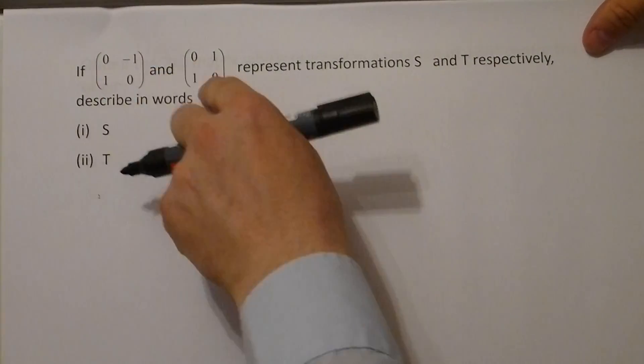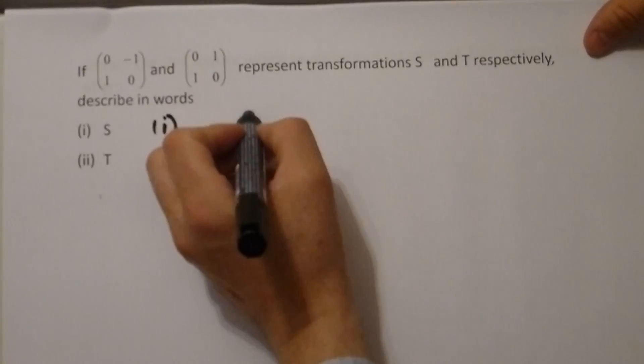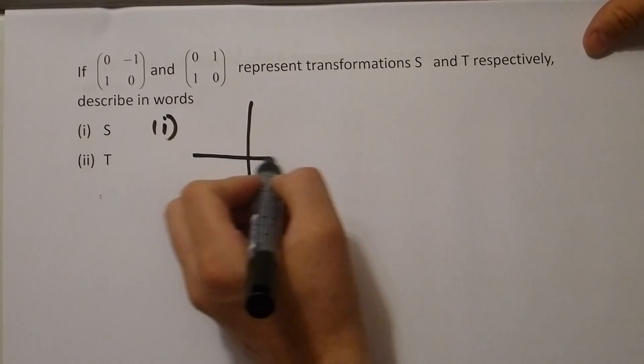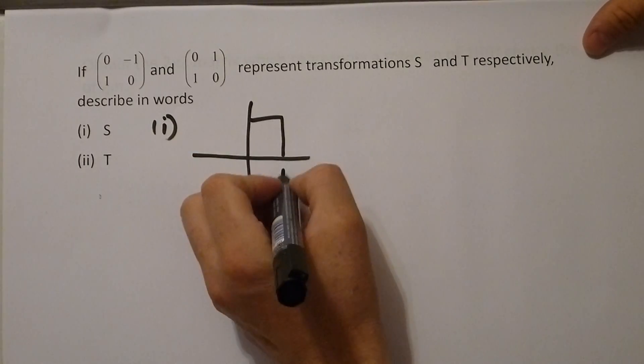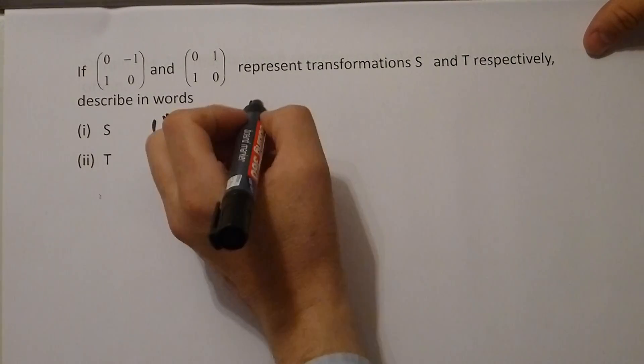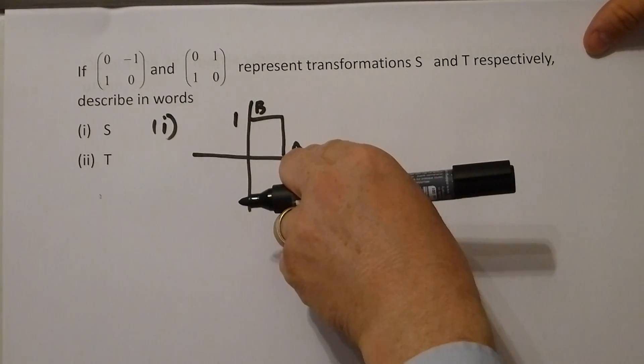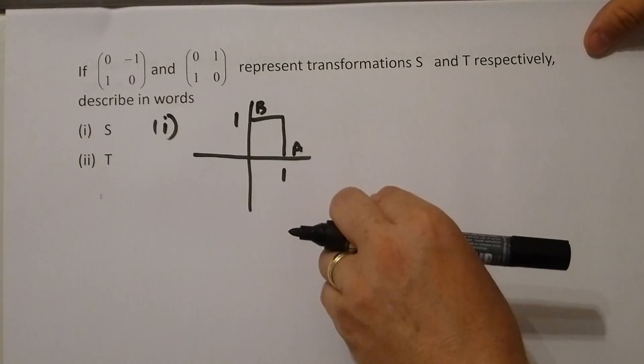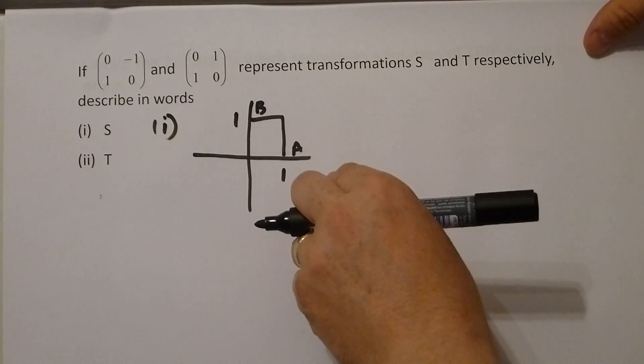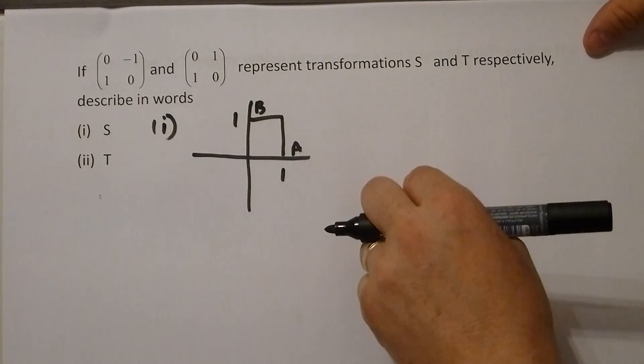In order to describe the transformation of these two, it is easily done using a unit square. I always call this coordinate A and call this coordinate B. If we acknowledge where A moves to and where B moves to, then we can determine what transformation we have got.